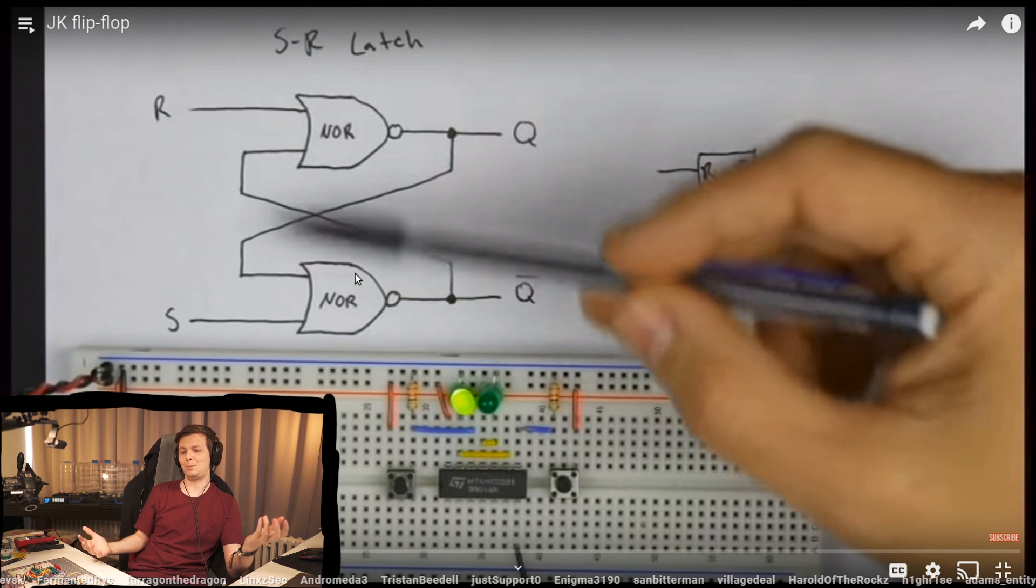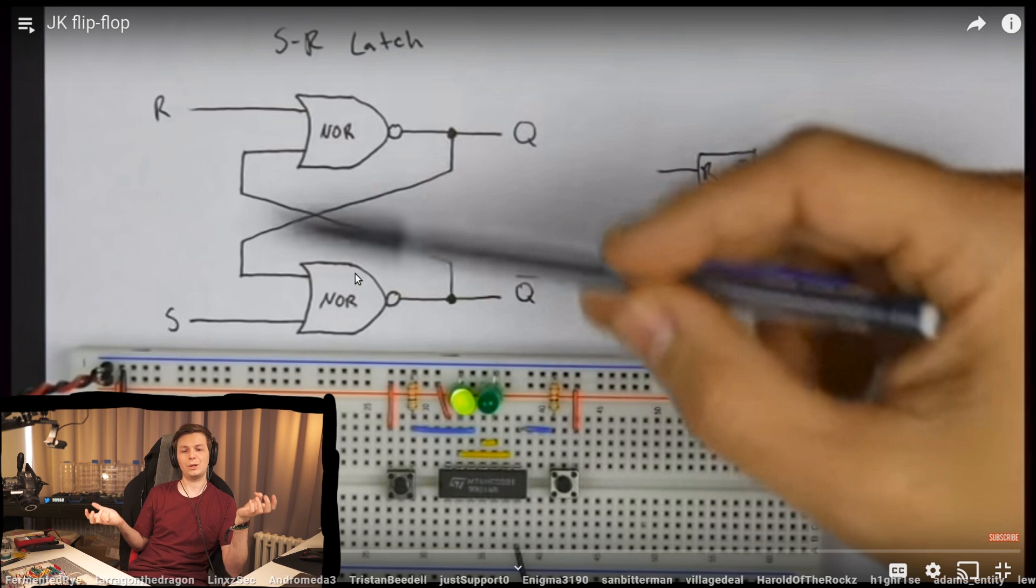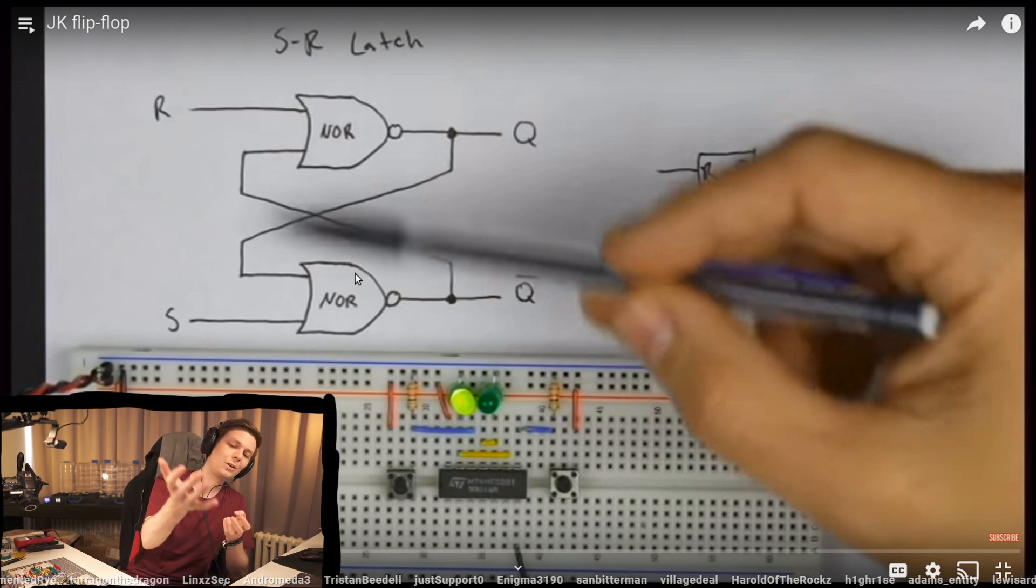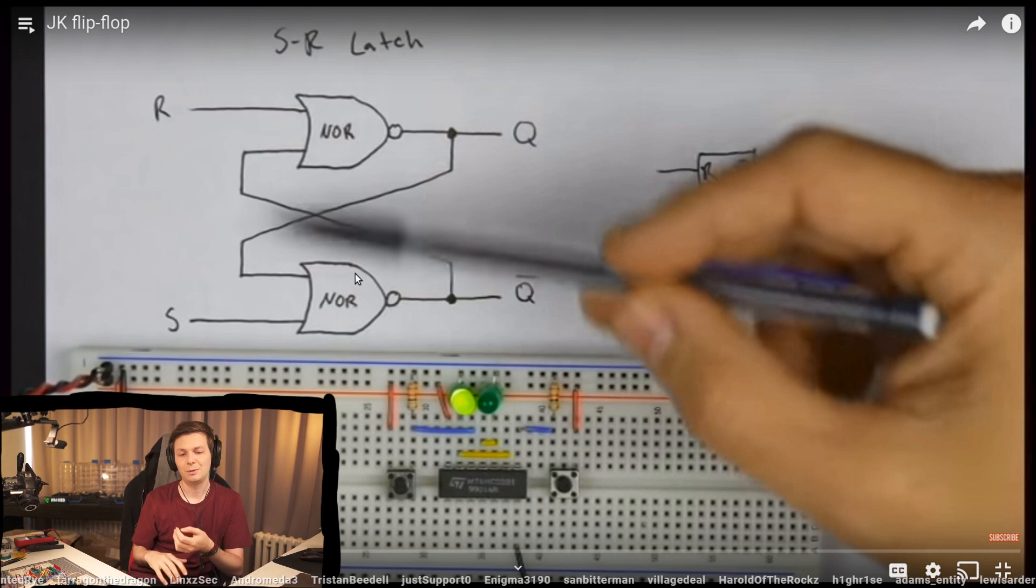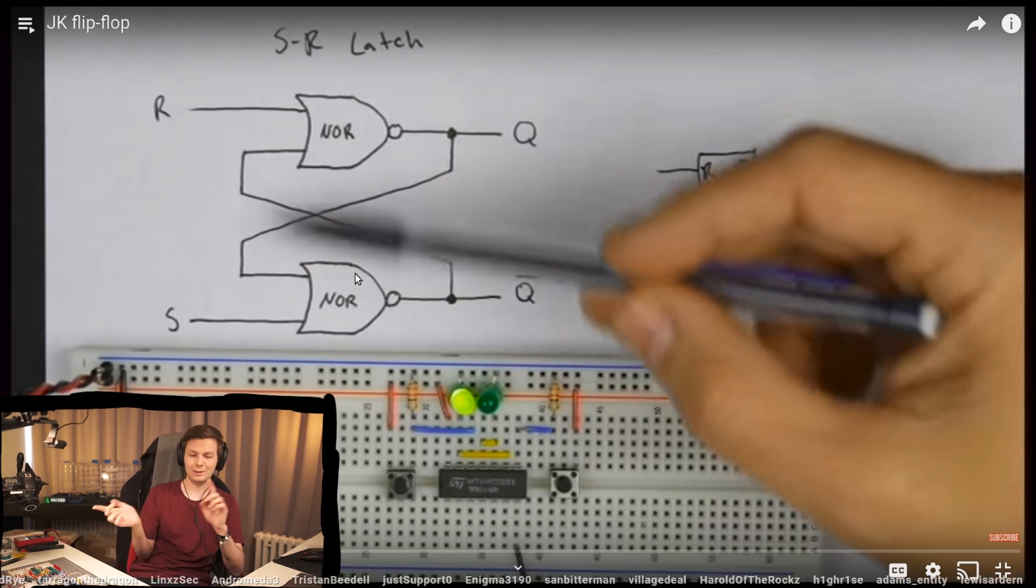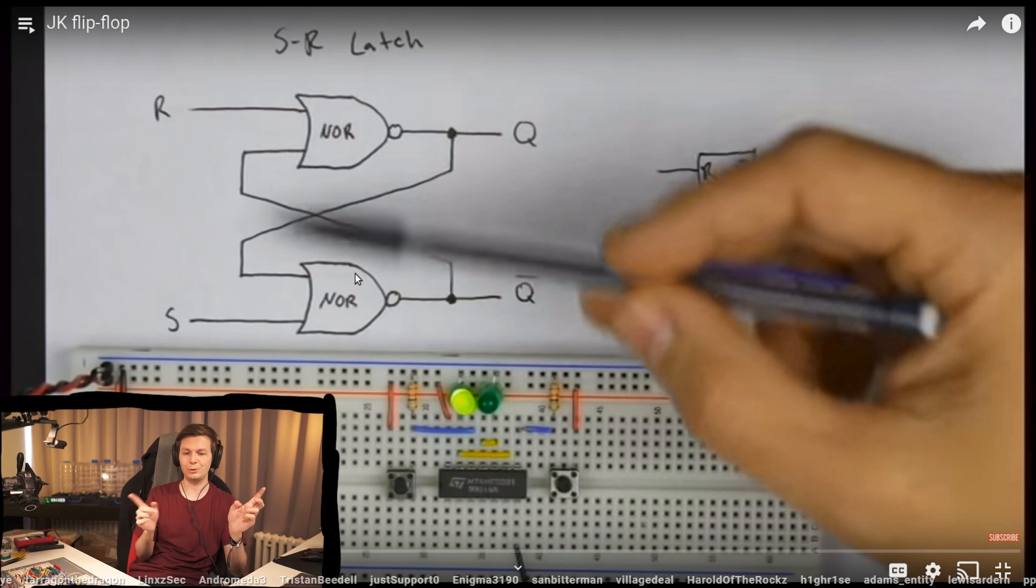weird interesting behavior emerges. And that weird interesting behavior can be, for example, made into what we are calling an SR latch, which is basically like flip-flopping between set and reset, between Q and not Q outputs.